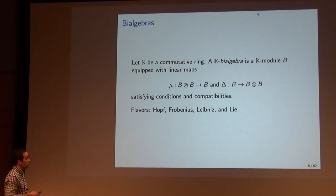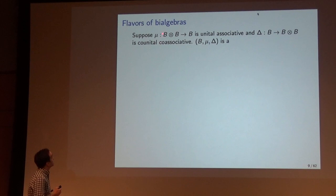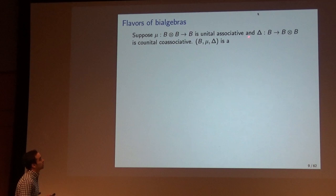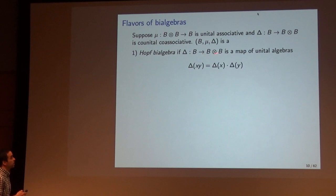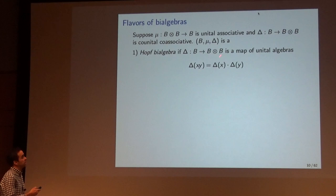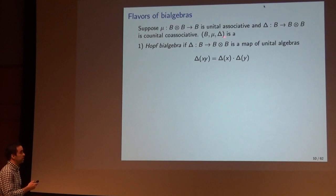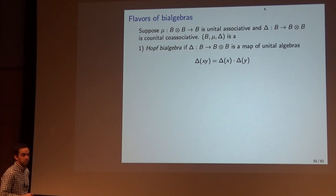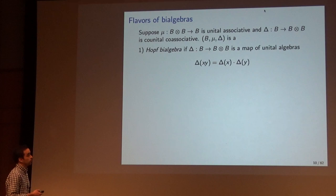Depending on the compatibilities, we will give them a special name. In the first three types of bi-algebras, I will assume the product is a unital, associative product and the co-product is a co-unital, co-associative co-product. We say B is a Hopf bi-algebra if the co-product is a map of unital algebras. So here I consider B tensor B — the tensor product will always be over the underlying ring K — as an algebra with the tensor product of products.